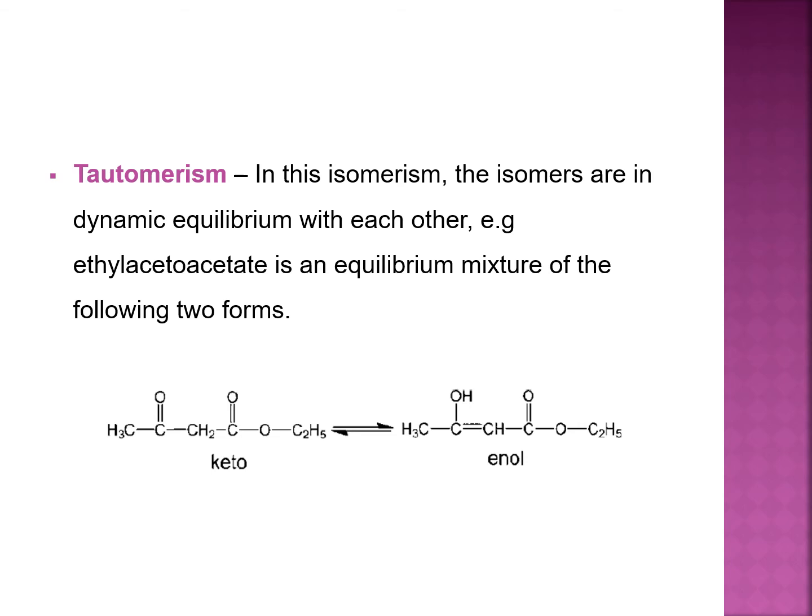Next, tautomerism. In this isomerism, the isomers are in dynamic equilibrium with each other. For example, ethyl acetoacetate is an equilibrium mixture of two forms: the keto form and the enol form.